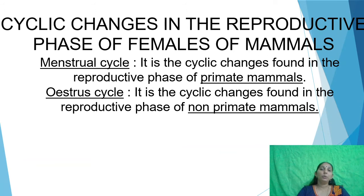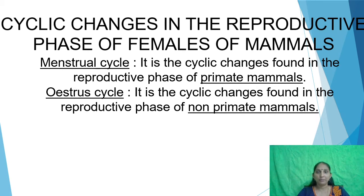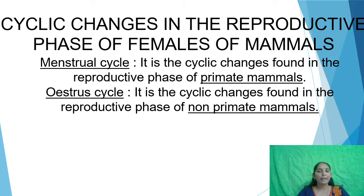Now we are going to see some cyclic changes occurring in the females of mammals — those animals which give birth to offspring. The first type of cyclic change is the menstrual cycle. The menstrual cycle is the cyclic change found in the reproductive phase of primate mammals such as human beings.